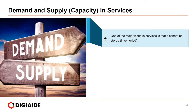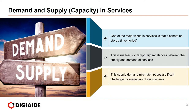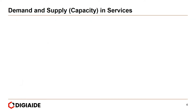One of the major issues in services is that it cannot be stored or inventoried. This leads to temporary imbalances between the supply and demand of services. This supply-demand mismatch poses a difficult challenge for managers or service firms. At any given moment, a fixed capacity service may face one of the following four conditions.